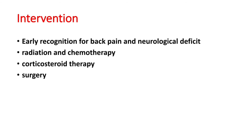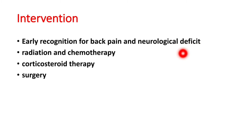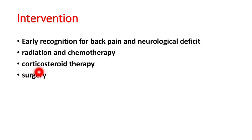Intervention: recognize why back pain is happening at an early stage and identify neurological deficits like numbness or tingling, which can suggest spinal cord compression. If a tumor is identified, give radiation and chemotherapy to the patient. As the tumor can cause inflammation, give corticosteroid therapy to reduce that inflammation. Ultimately, surgery must be performed to remove the tumor.